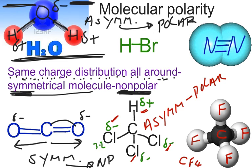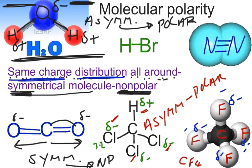Let's look at CF4, carbon tetrafluoride. We have fluorines all around — fluorine has the highest electronegativity there is. Each fluorine will have a partial negative charge. When we look at symmetry, we have negative all around the molecule — the same charge distribution all around. Carbon tetrafluoride is symmetrical, and using our 'symnon' memory device, this molecule would be nonpolar, even though the individual bonds are polar. When asked about polarity, please differentiate between bond polarity versus molecular polarity.